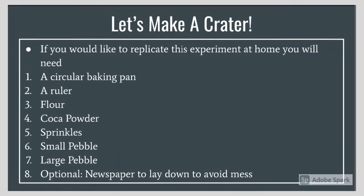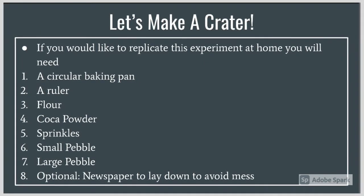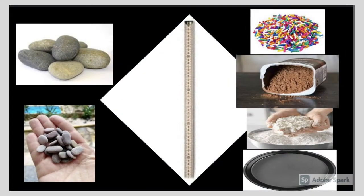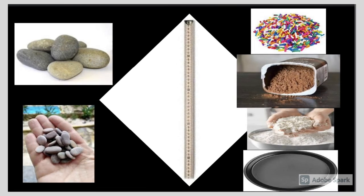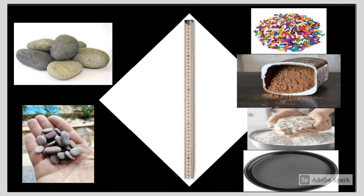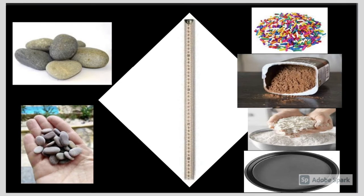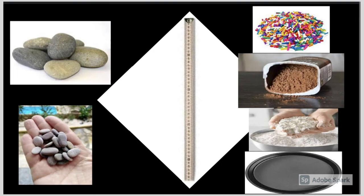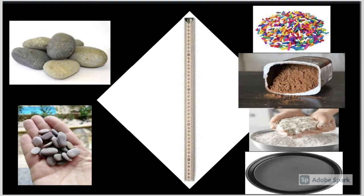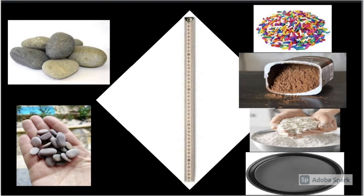Now that we have learned so much about craters, let's have some fun and create some ourselves. If you would like to complete this experiment at home, you will need a few simple items that are listed below. Once you have all the materials, you will need to set up the experiment as shown. Set your pan down, then cover it with flour, which will act as a subsurface also known as regolith. Then put cocoa powder on top, which acts as the top surface of the moon. Then put sprinkles on top of that to act as the ejecta or the material dispersed. When I did this experiment at home, I chose two different heights to drop my rocks from: 18 centimeters and 36 centimeters. Now let's watch how my experiment went.